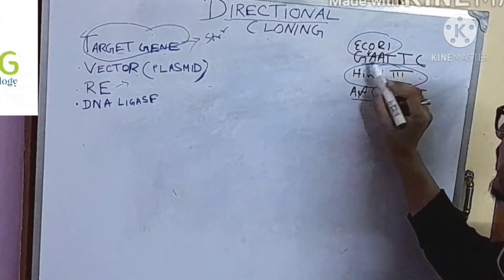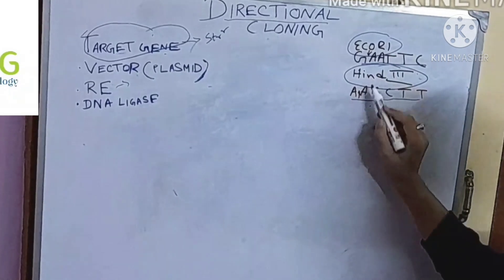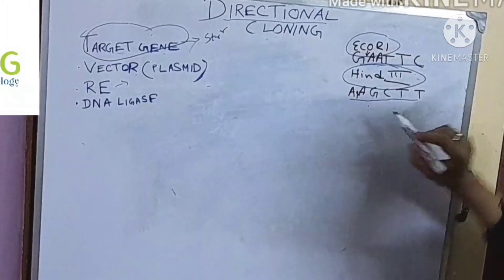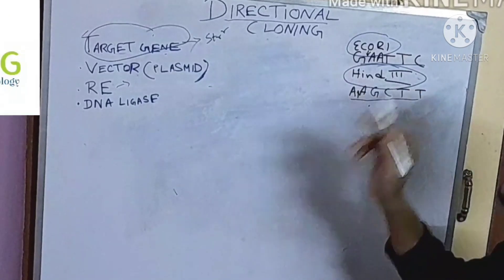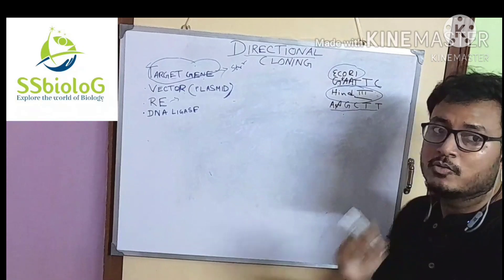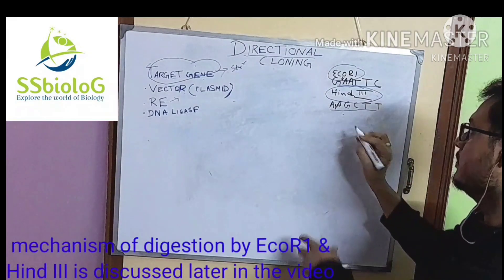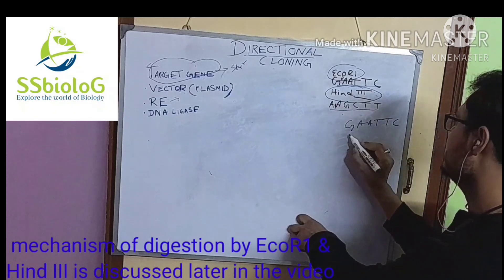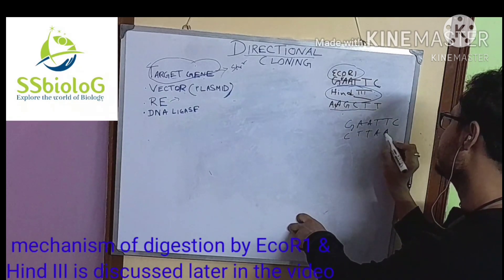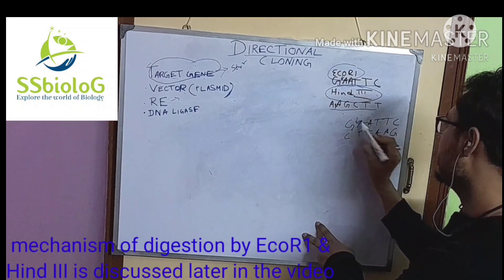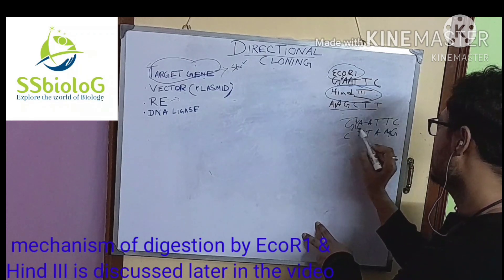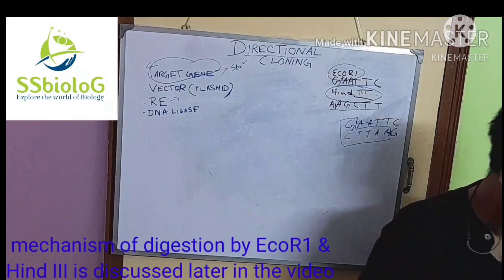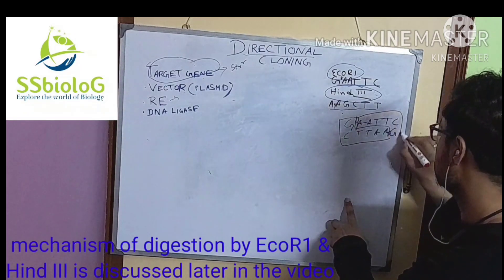EcoRI recognizes a sequence called G-A-A-T-T-C and HindIII recognizes a sequence called A-A-G-C-T-T. EcoRI produces a cut between G and A, and HindIII cuts between A and A. The cuts they produce are called staggered cuts, which means they produce an overhang — for example, G-A-A-T-T-C with its complementary strand C-T-T-A-A-G.